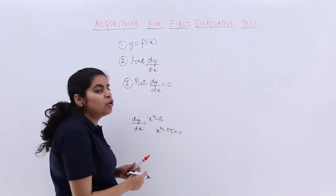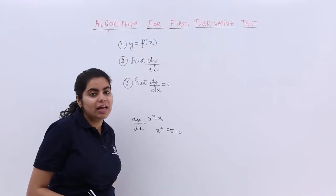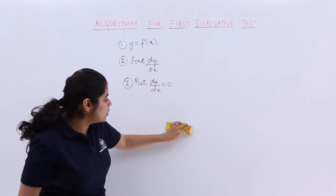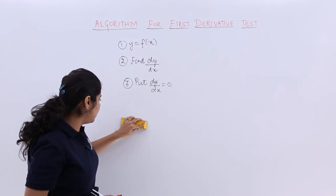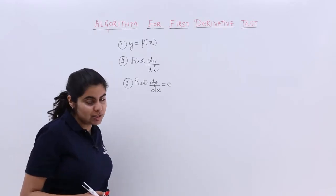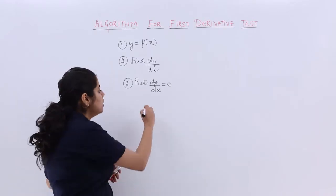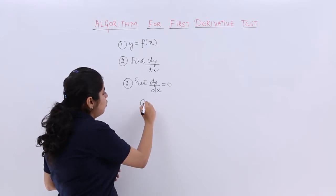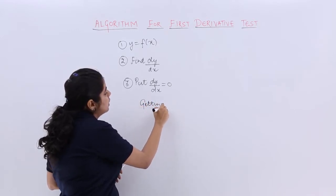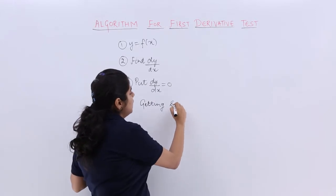So the algorithm goes as follows: you have to find out dy by dx, then you have to put it equal to zero. After you have done it, you'll be obtaining some values.